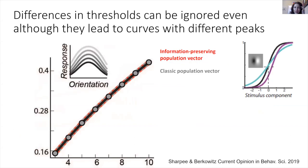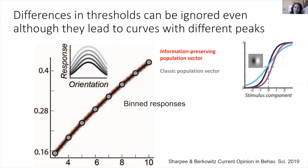Another prediction of this theory is that not all diversity in tuning curves is important. If neurons have the same preferred stimulus with different peaks and widths, but all variability is caused only by variation in thresholds, then you can compute both the classic and the information-preserving population vector and capture full information. The coarse-grained values of the information-preserving population vector do not lose information essentially.